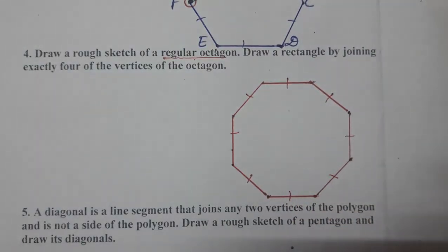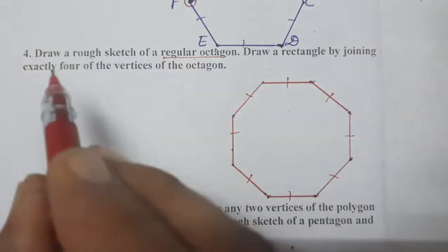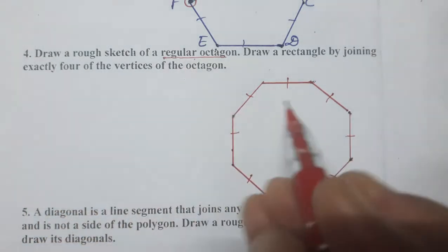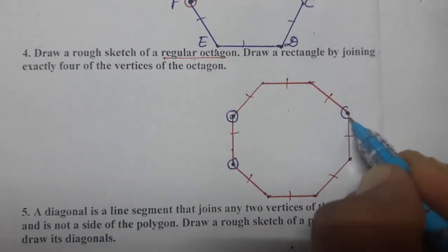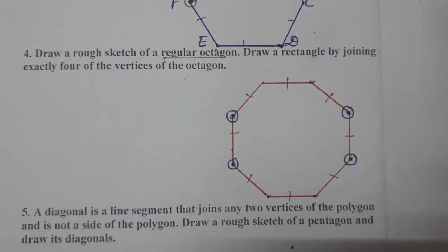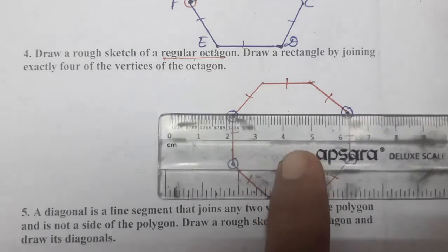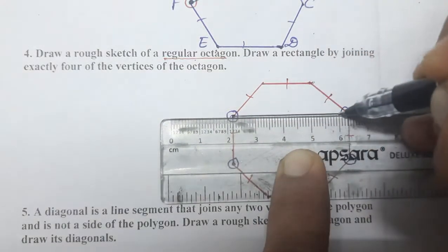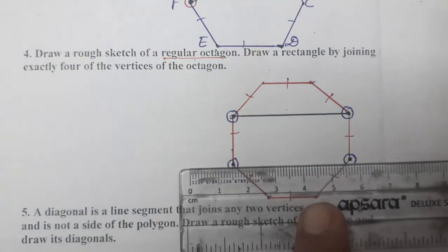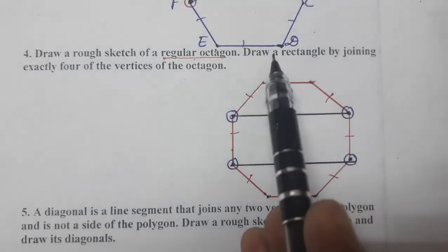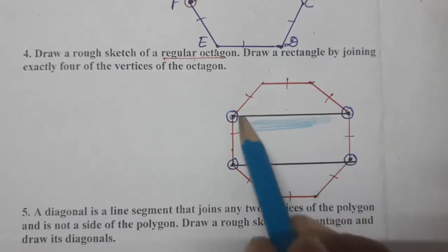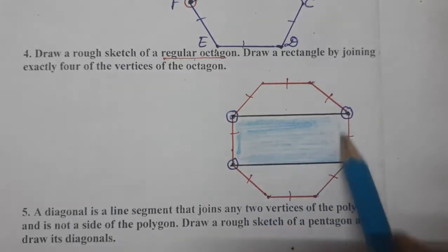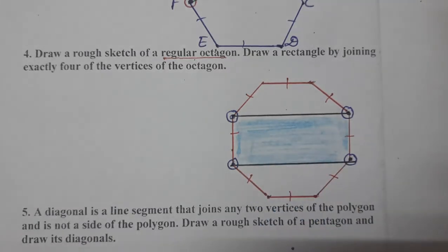Next, draw a rectangle by joining exactly four of the vertices of the octagon. We have to join four vertices exactly to form a figure. Joining these four vertices — and what figure do we obtain? We have drawn one rectangle. This is the rectangle, and we can mark and color it. In this way a rectangle is formed.